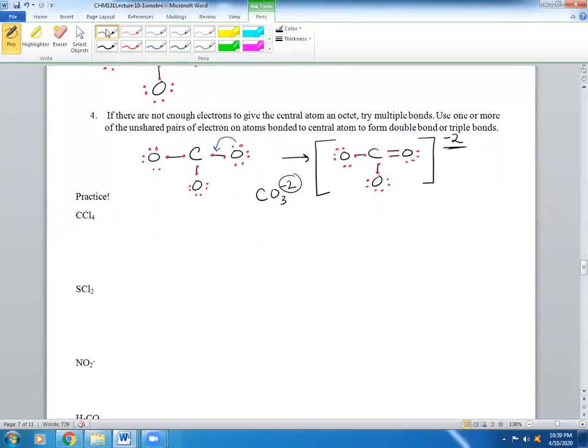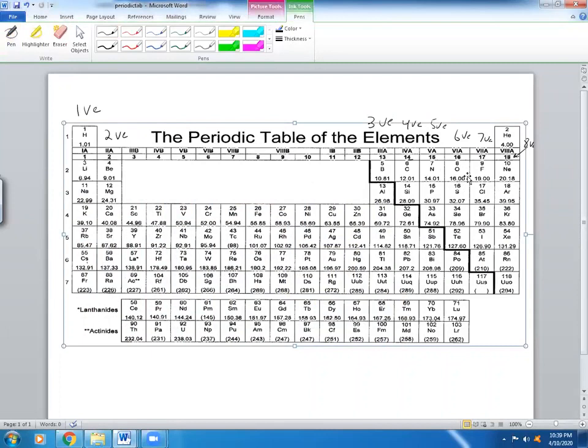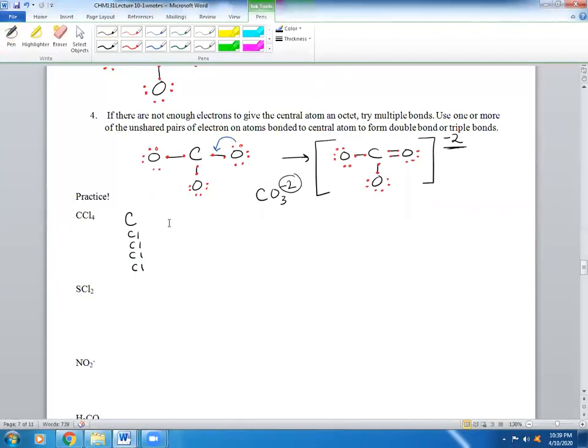If you have CCl4, let's start. C and I have 4 Cls. Let's find their valence electrons. C has 4, Cl has 7, and I have 4 chlorine atoms. Add them up.